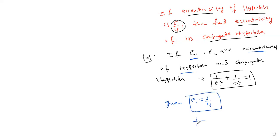Substitute there: 1 by 5 by 4 whole square plus 1 by e2 square. Now solve this. This gives you the answer.